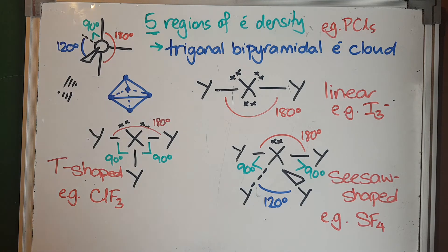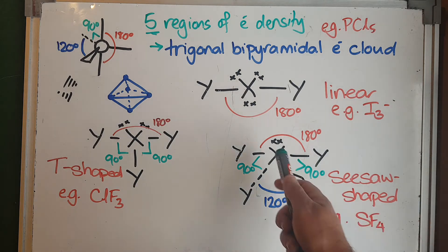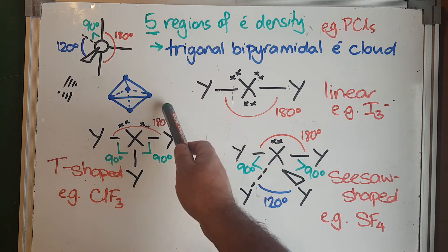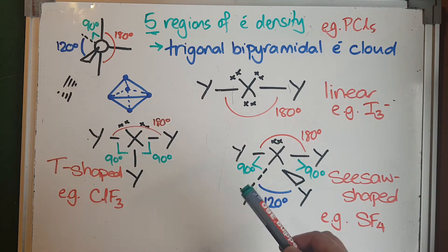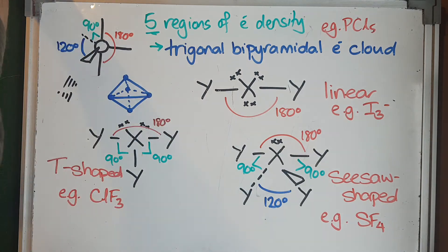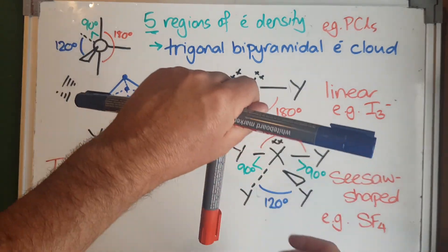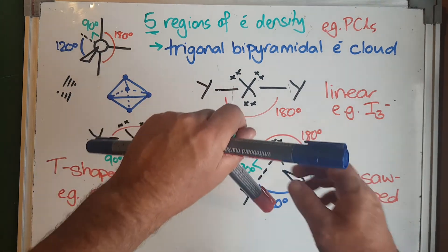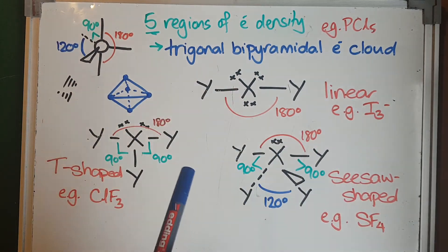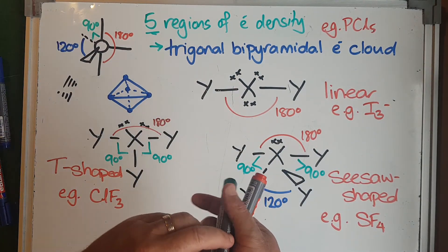And the last one—this one's really hard to show—but basically when you've got one lone pair, we're just going to fill in another one of those. Now it's easier if you spin it up the other way and have the one going into the board and the one coming out of the board showing. If you tilt it up, they create the base of a seesaw.